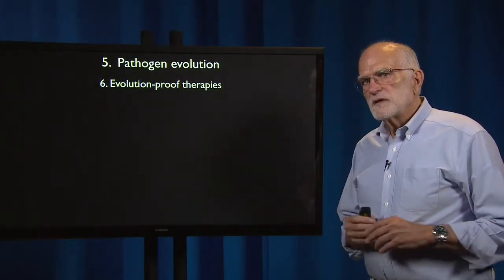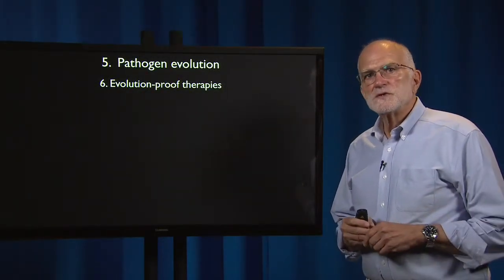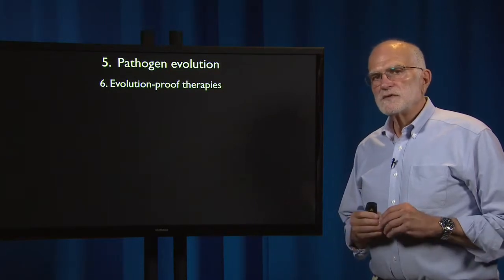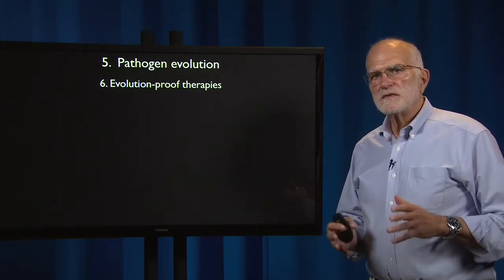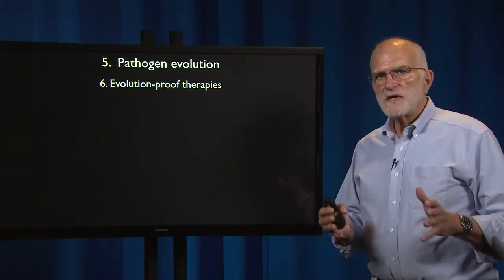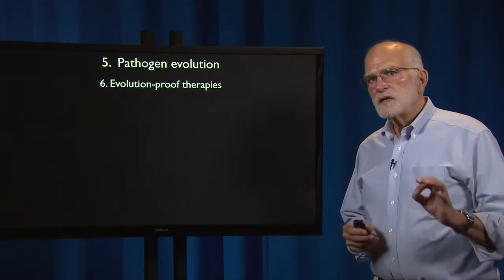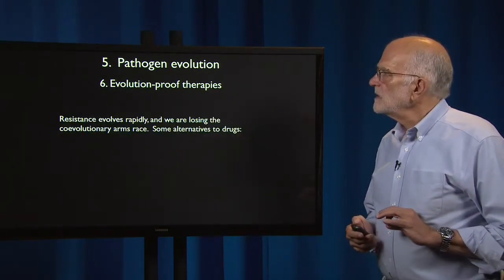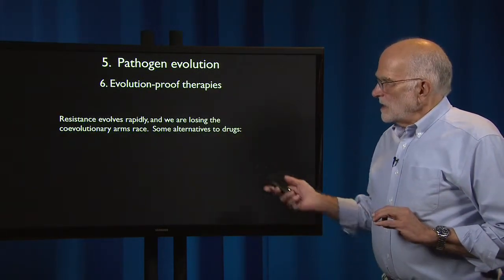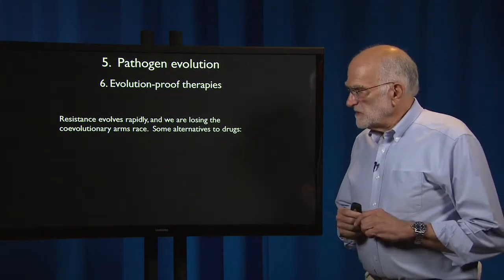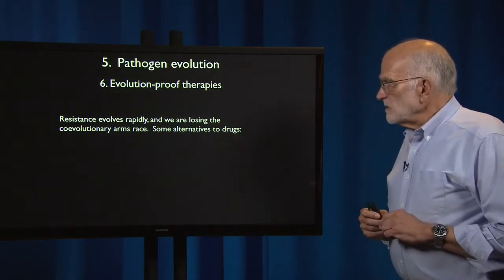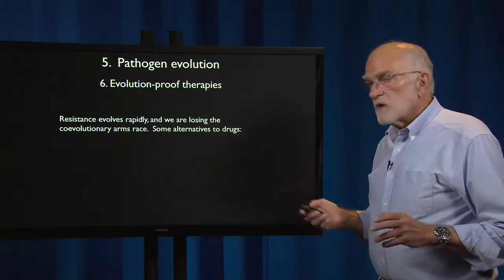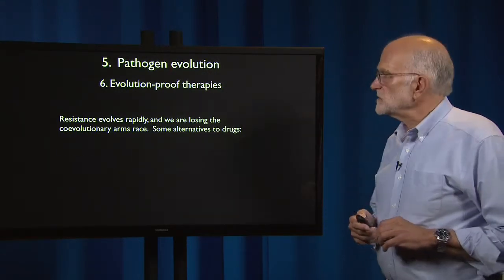The evolution of antibiotic resistance is such a serious problem that evolutionary biologists have started thinking about methods of treating patients that will not elicit an evolutionary response. We've seen that resistance evolves rapidly, we're losing the co-evolutionary arms race, and there are some alternatives to drugs.